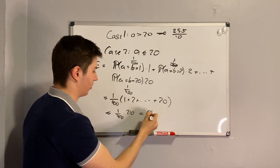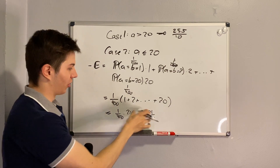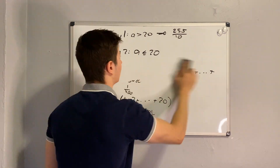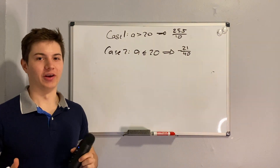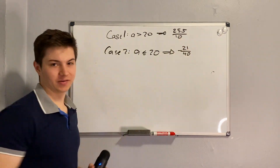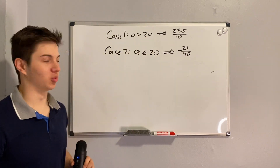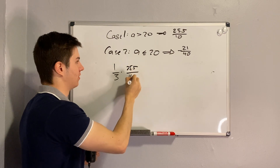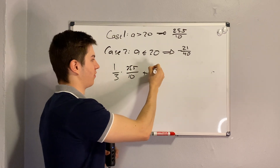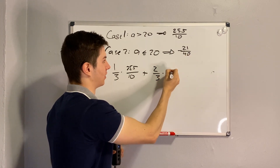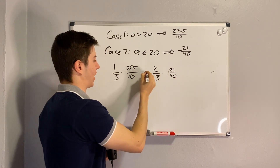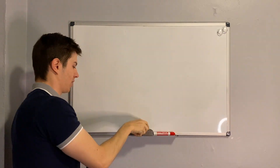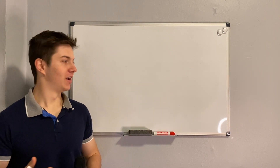That gives 21/40, and since we lose this amount, the expected payoff when A = B is negative 21/40. Our total payoff is the weighted sum: the probability A > 20 is 1/3, times 255/10, plus the probability A ≤ 20 is 2/3, times negative 21/40. This equals 8.15, which is our final answer. I hope you enjoyed that problem — if you did, please consider subscribing, and I'll hope to see you next time.